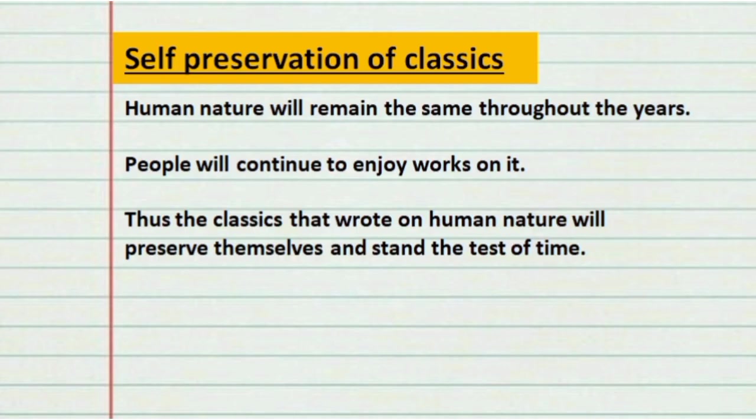Basically, Arnold is trying to raise the standards of poetry that had declined after the Romantic period. For this, he asks the poet to maintain high truth, high seriousness, and high diction when writing poetry, and he also asks critics to evaluate poems by comparing them with the classics. If you found this video useful, please subscribe and mention your doubts and suggestions in the comment section.